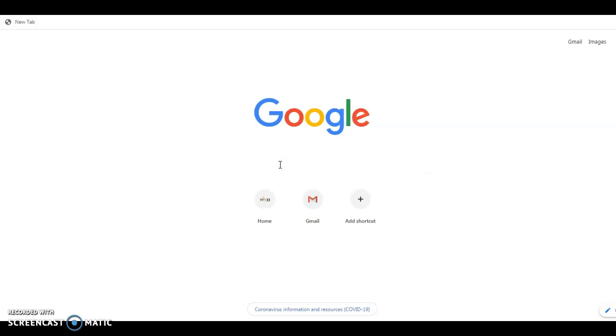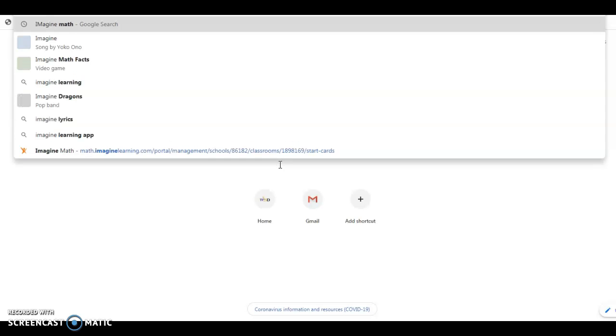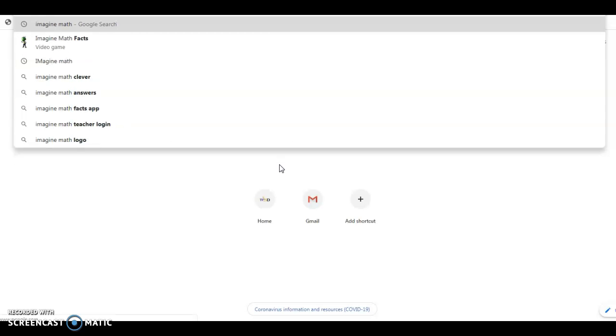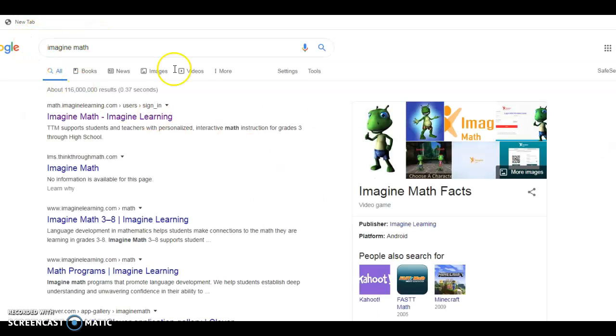The first thing we can do is type Imagine Math into our Google search. You should see something like this, and we're going to go to the first one right here.